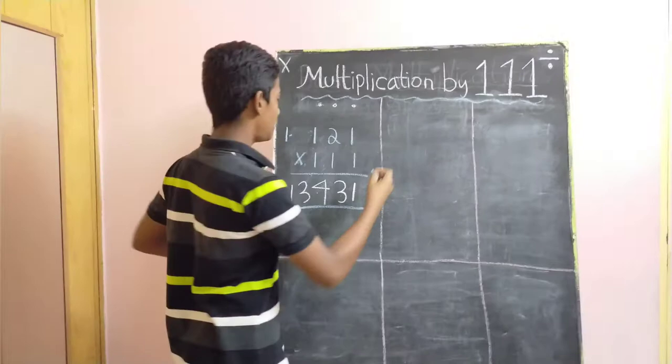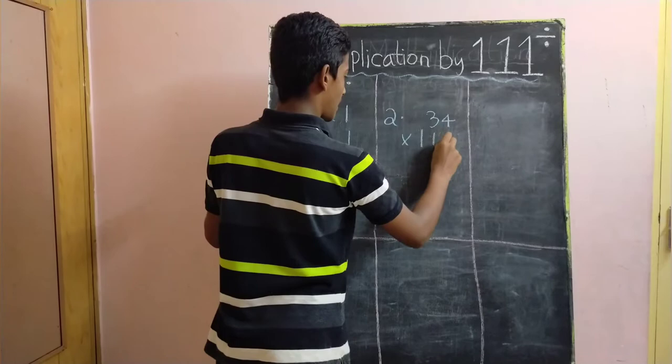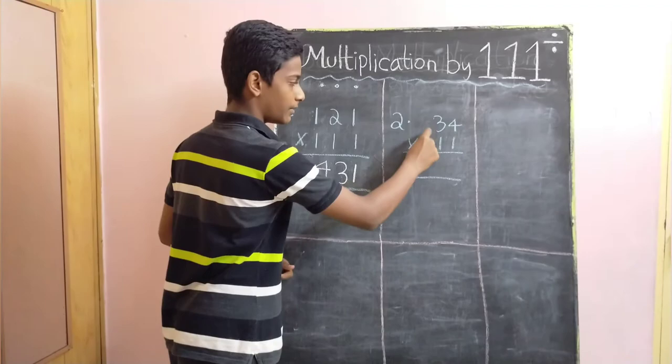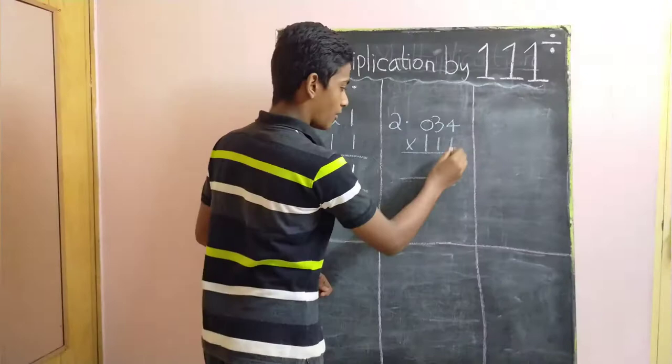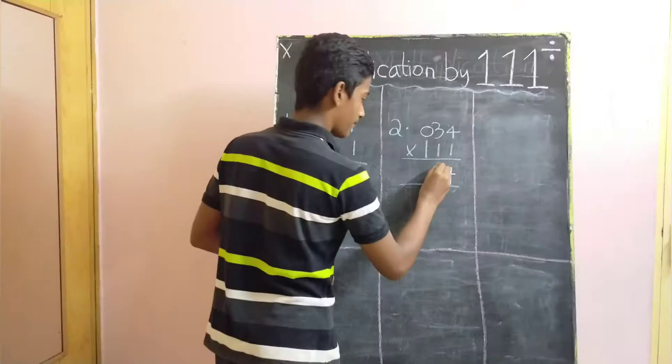Let's take 34 into triple 1. If there are no numbers here, you have to take it as 0, 3, 4. Now, for obtaining this, for the last digit, we have to bring down the number, this number as it is, then 4 plus 3.